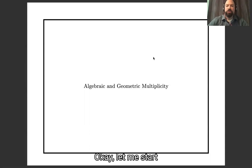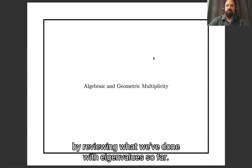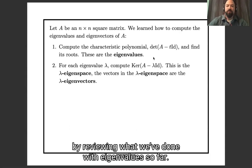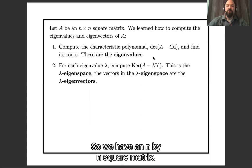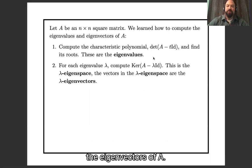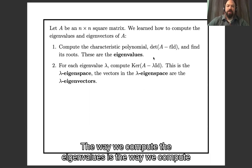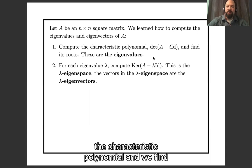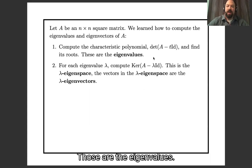Let me start by reviewing what we've done with eigenvalues so far. If we have an n by n square matrix, we know how to compute the eigenvalues and the eigenvectors of A. The way we compute the eigenvalues is that we compute the characteristic polynomial, find the roots of the characteristic polynomial, and those are the eigenvalues.